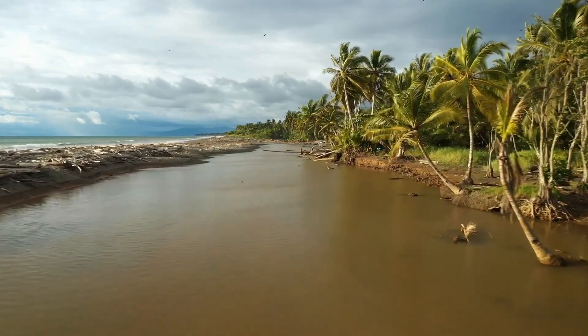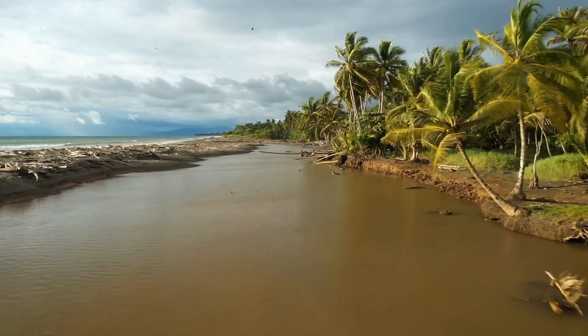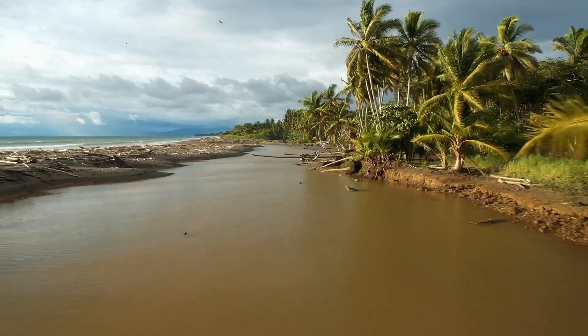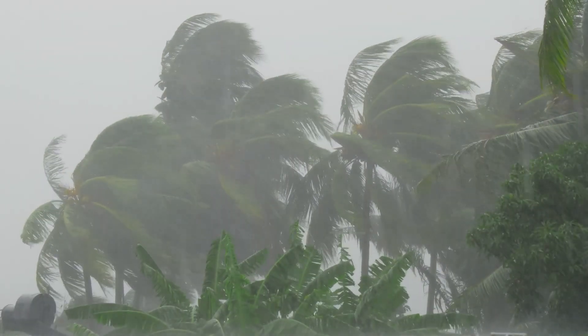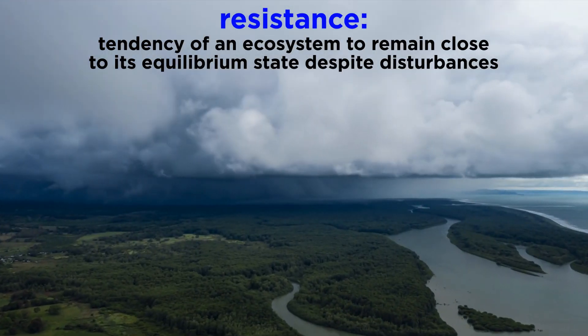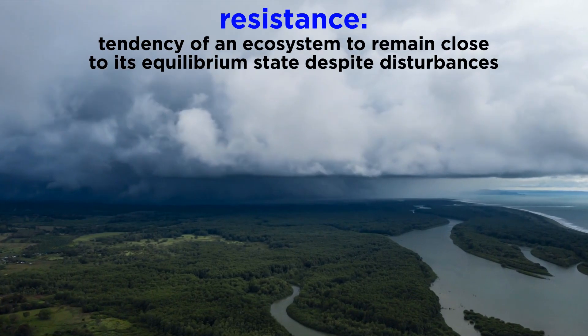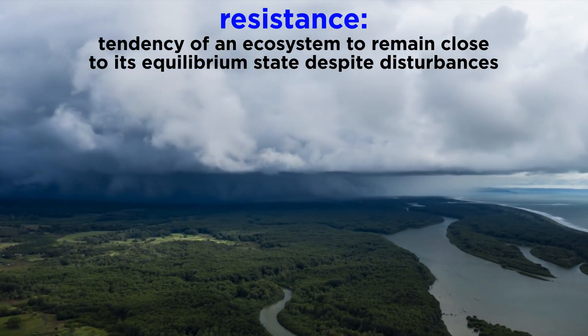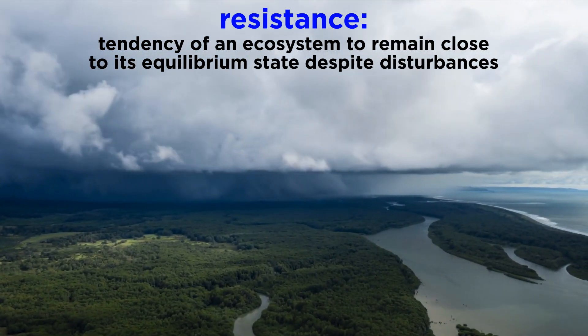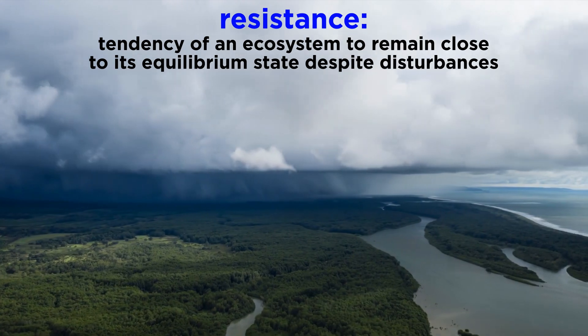Ecosystems are dynamic entities and they are subject to periodic disturbances. More than likely they are always in the process of recovering from some past disturbance. The tendency of an ecosystem to remain close to its ideal or equilibrium state despite these disturbances is termed its resistance.